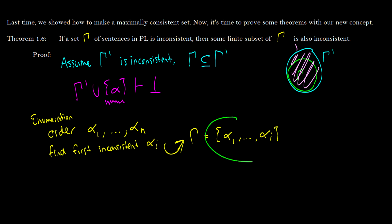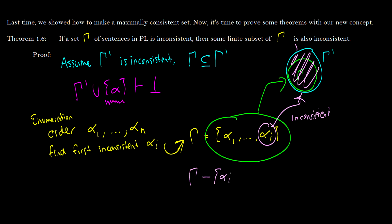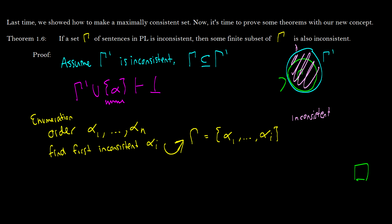This set is our gamma, and alpha is the element making it inconsistent. Now, can we remove it? Sure — we just take gamma and subtract alpha i, and then it's consistent. But that's not the point of this proof. The point is to prove that some finite subset of gamma prime is inconsistent, which is what we have proven here, written in yellow. So if we have a big set gamma that's inconsistent, there's going to be a smaller set that's also inconsistent.